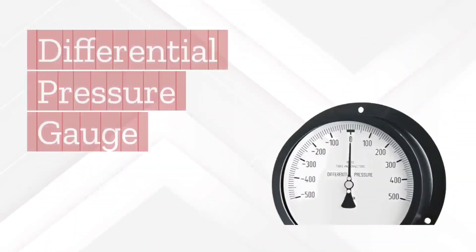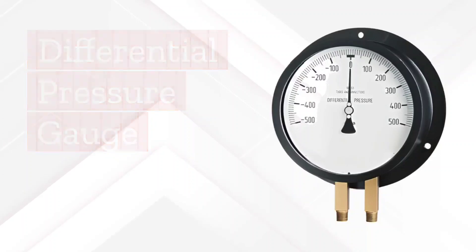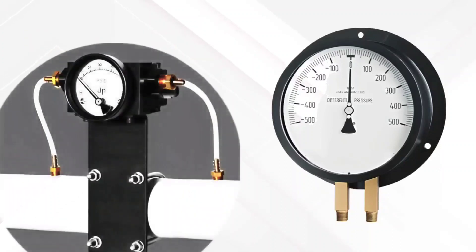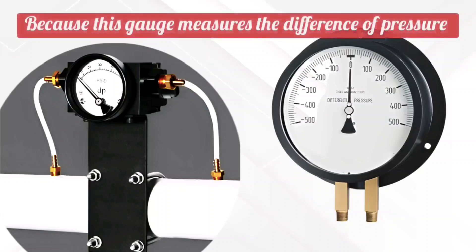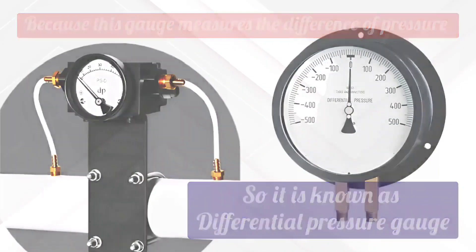In pressure gauges, there is also a differential pressure gauge, which measures the pressure difference between two points. Because this gauge measures the difference of pressure, it is known as a differential pressure gauge.